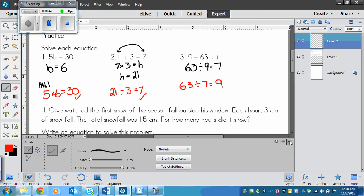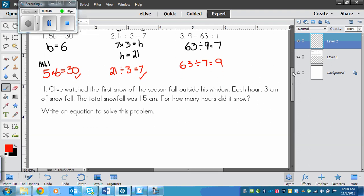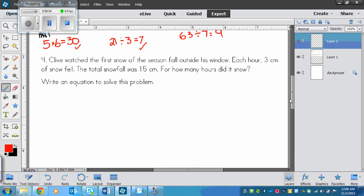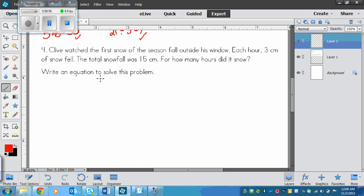If you have not done the story problem yet, please pause the video and then play again to see if you've got the right answer. Now that you have the answer, let's see what it says. Clive watched the first snow of the season fall outside his window. Each hour, 3 centimeters of snow fell. The total snowfall was 15 centimeters. For how many hours did it snow?